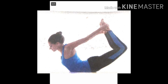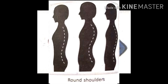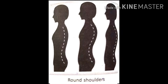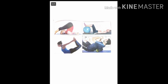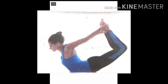Corrective measures for round shoulders: round shoulder is a common postural deformity and it can be corrected with the following exercises. Keep your fingertips on your shoulders and rotate your elbows in clockwise and anticlockwise directions. Hold a horizontal bar regularly for some time. Perform Chakrasana and Dhanurasana for some time. These are the corrective measures for round shoulders.